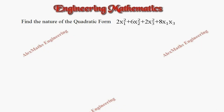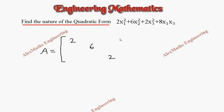Hi students, this is Alex. In this video we are going to find the nature of the quadratic form. From the given equation, we are going to write the matrix A, where the leading diagonal elements are the coefficients of x1 squared, x2 squared, and x3 squared. There is no x1x2 term so those positions are 0. The x1x3 term has coefficient 8, so half of that is 4. There is no x2x3 term so those positions are also 0.